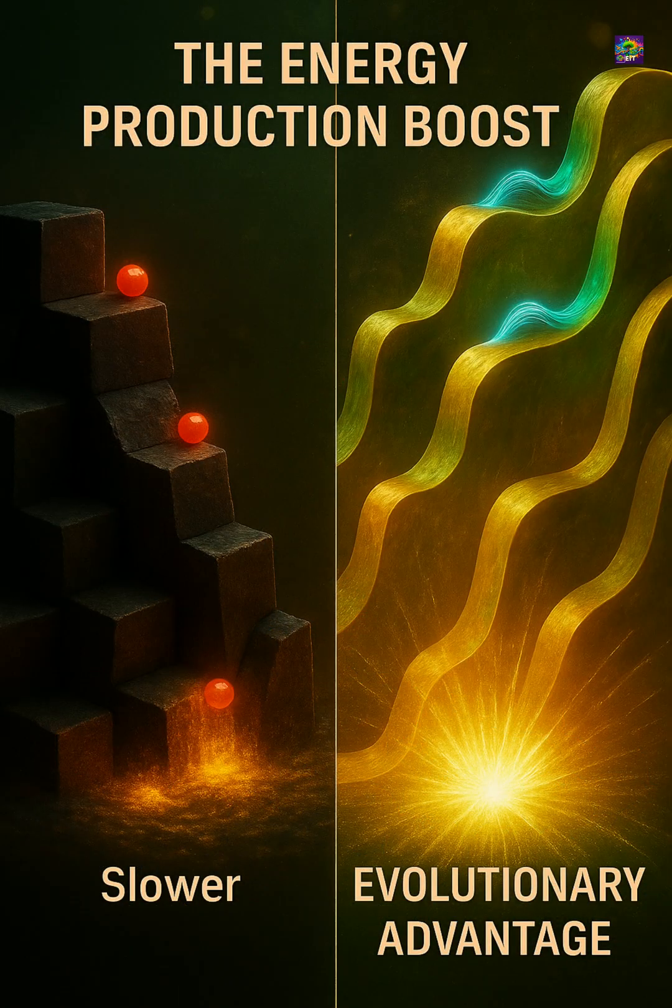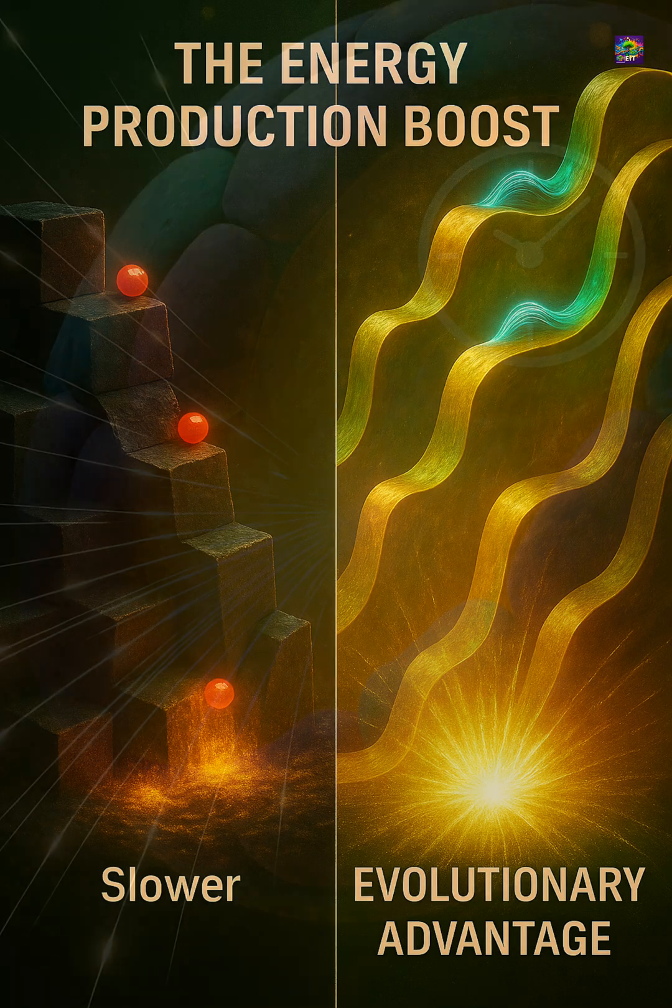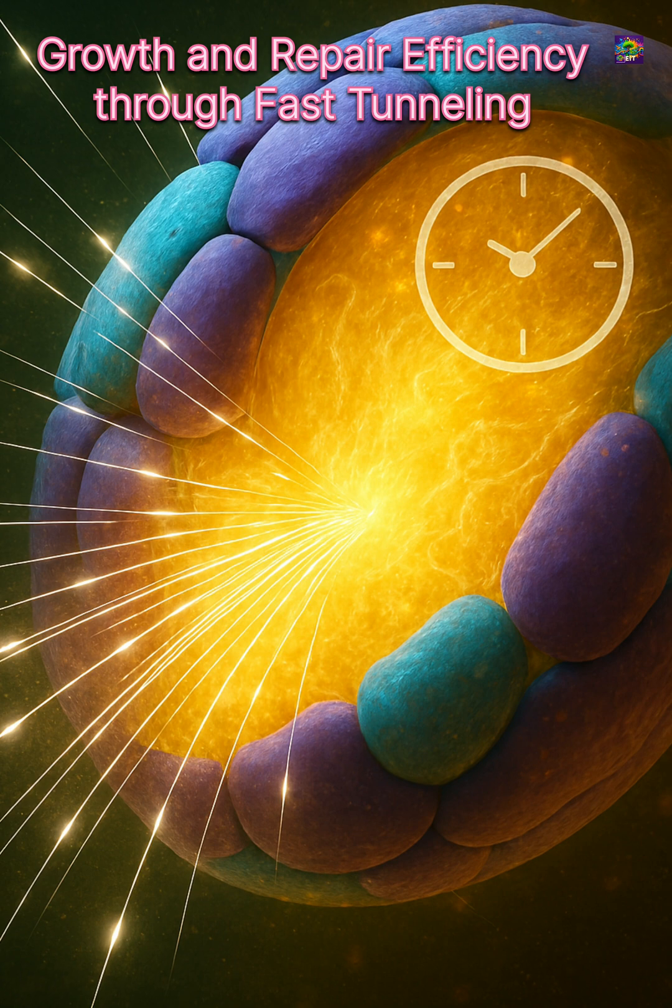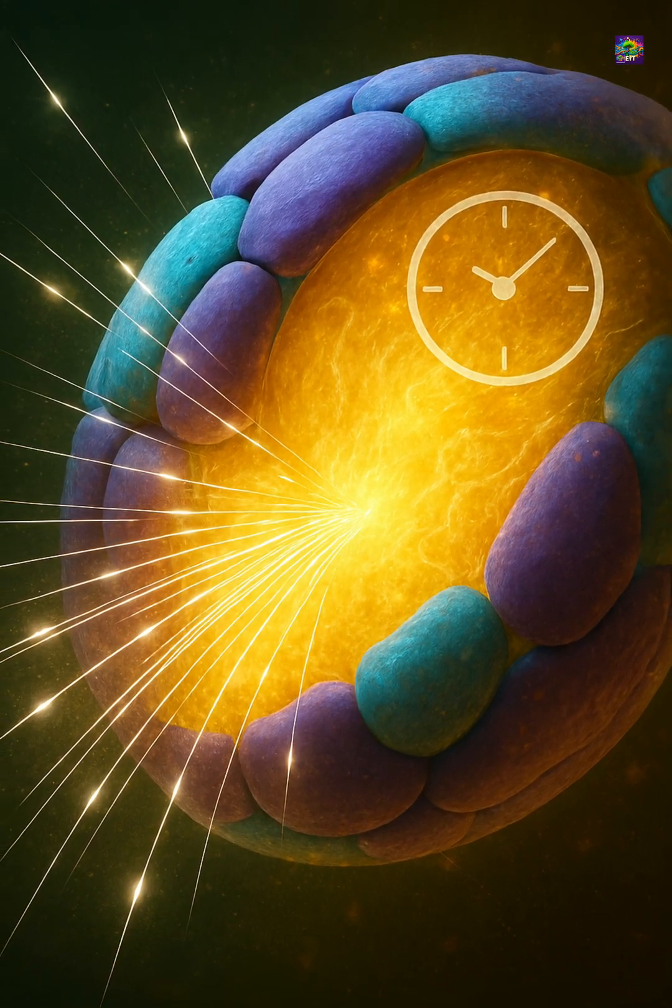Organisms that could move protons more quickly gained a clear advantage. They produced energy faster, repaired molecules sooner, and grew more efficiently. Tunneling, although invisible, became a silent boost that helped early metabolic pathways outperform slower chemical routes.